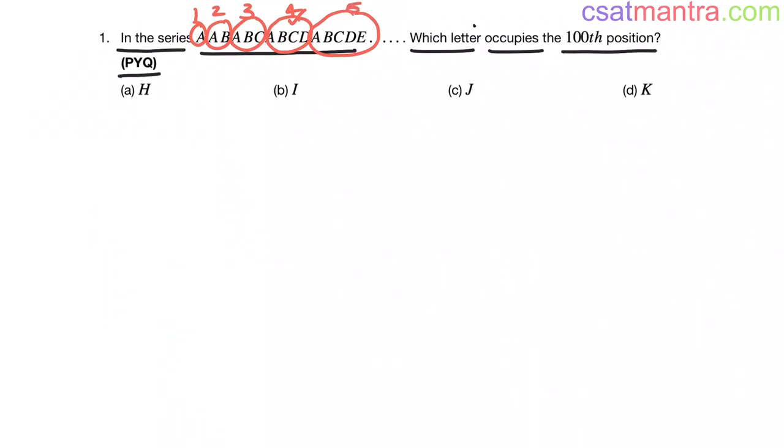Now, we need which letter occupies the 100th position. So 1 plus 2 plus 3 plus 4 plus 5. I am adding all these letters - the number of letters present in each set. Now, this is sum of n natural numbers. We don't know how many natural numbers are present, my friends.